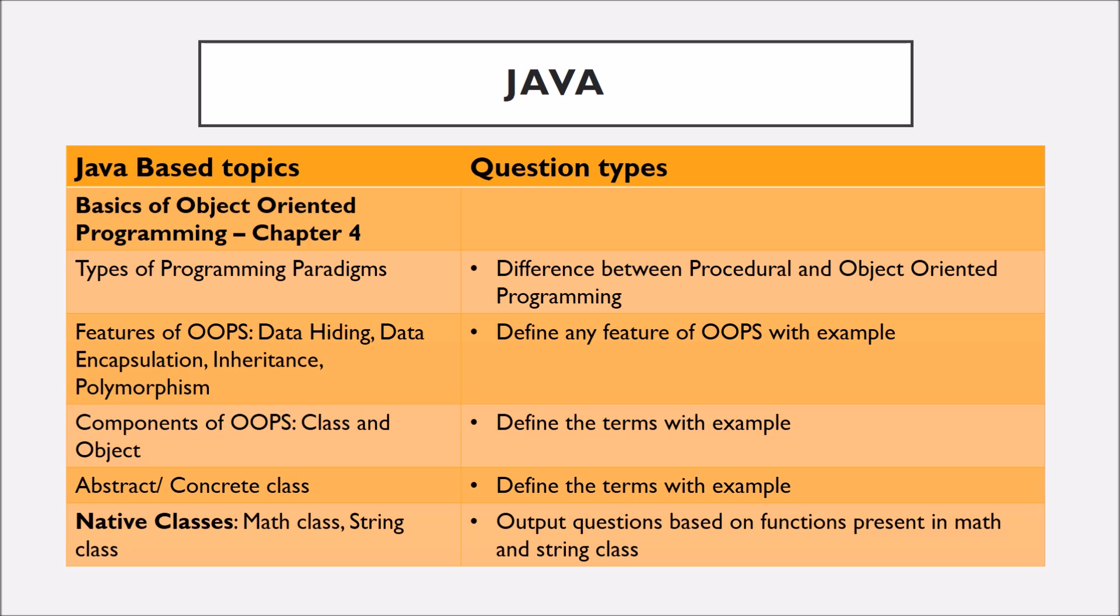From the topic object-oriented programming, you can be asked the different types of programming paradigms, that is procedural and object-oriented programming paradigms, features of OOP like data hiding, data encapsulation, inheritance and polymorphism. You can be asked to define any of this feature with examples.